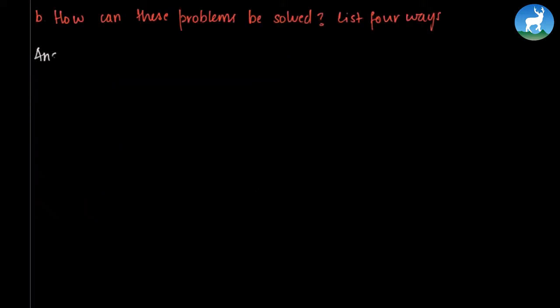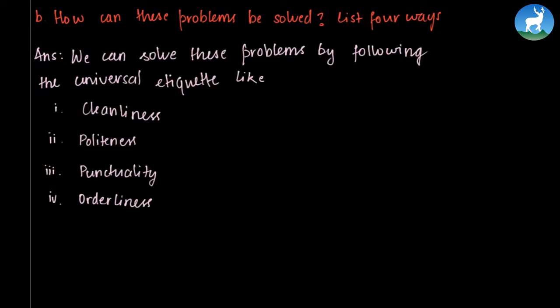Now, we need to list the solution to the problems of students. Or, we need to solve the problems that we have listed before. The question is, how can these problems be solved? List four ways. Now, the answer is given straight forward in the third paragraph which reads, There are many ways to eradicate sufferings. Universal etiquette like cleanliness, politeness, punctuality, and orderliness are four combatants against them. So the four ways through which we can solve the problems are cleanliness, politeness, punctuality, and orderliness.